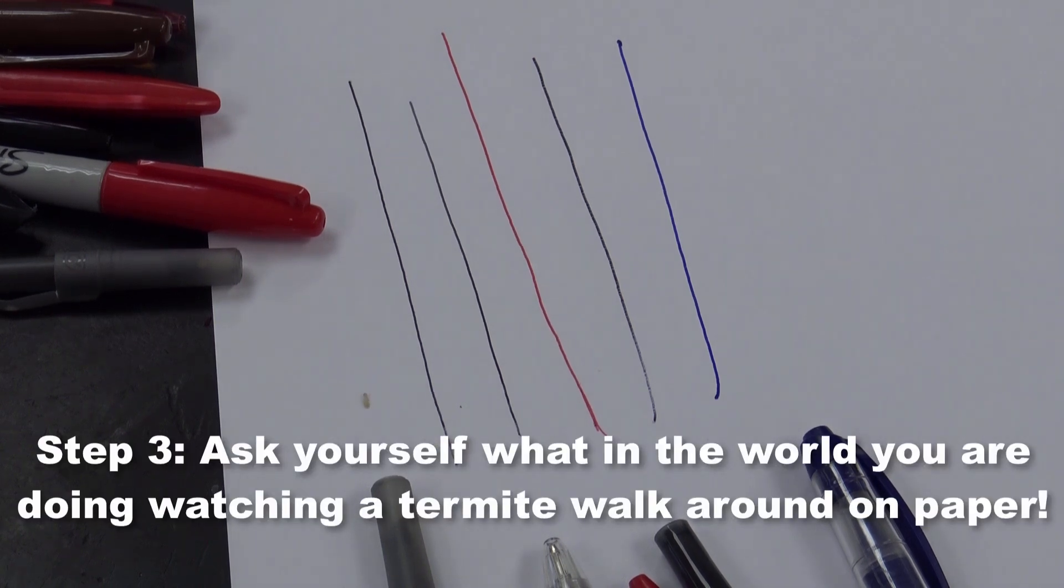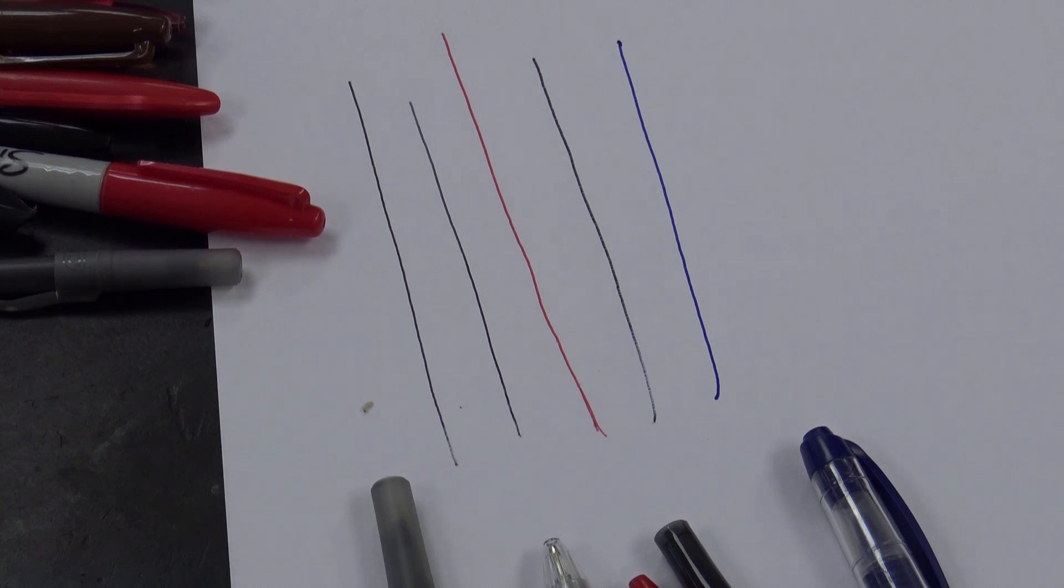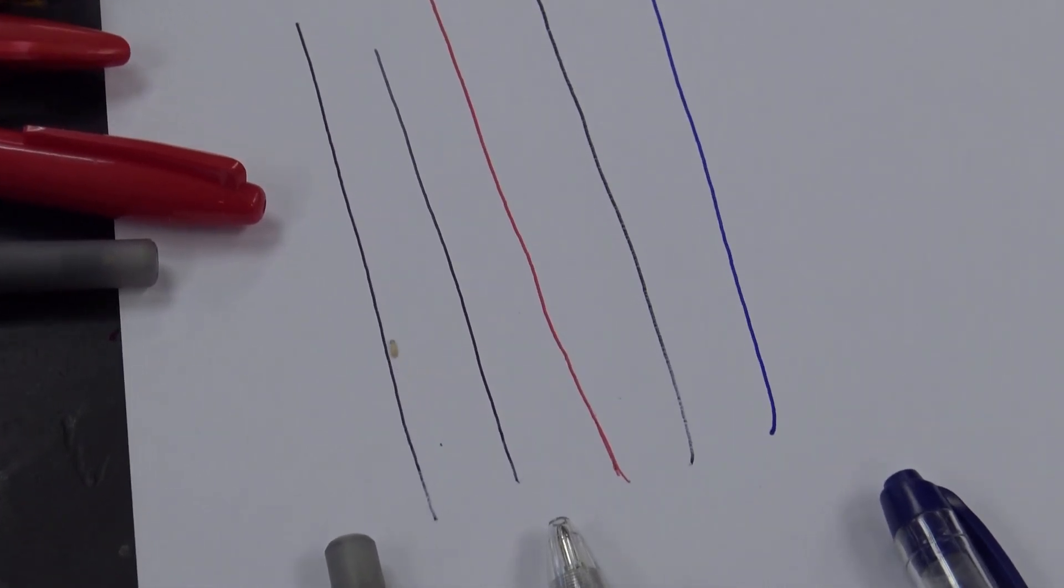Here's what they told me: you make some lines on the paper and it's possible the termite will follow the lines. Oh, wait a minute, what do we have here? Our little worker termite seems to be following one of the lines!